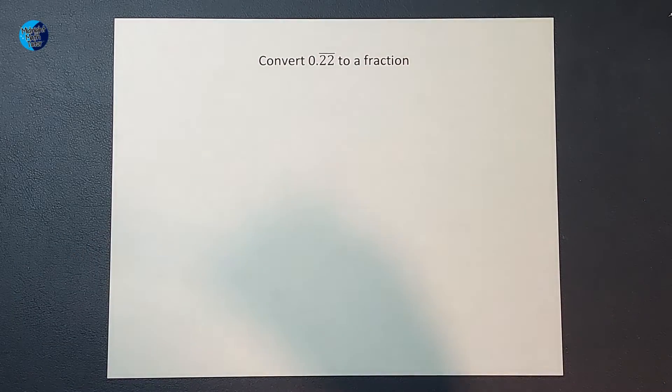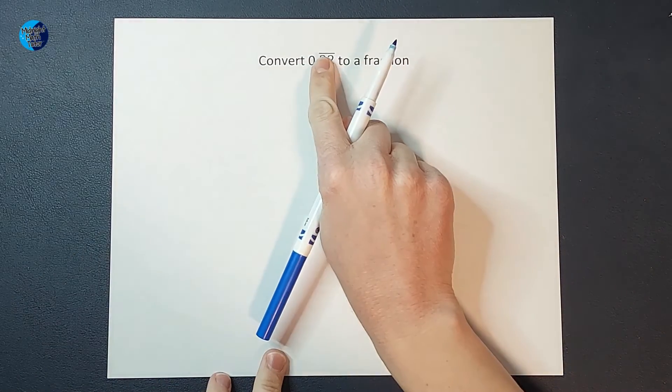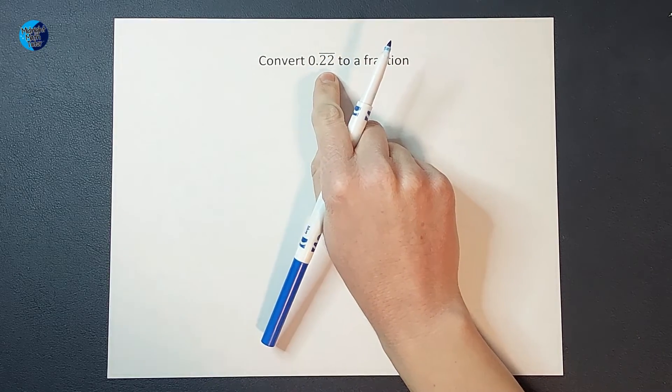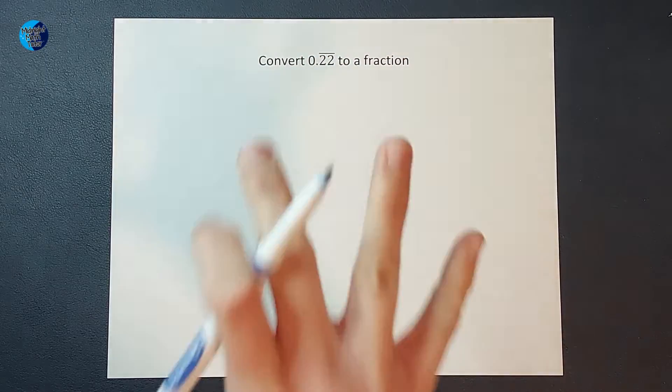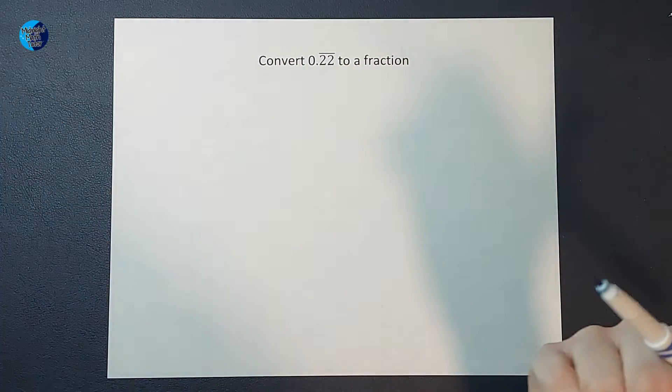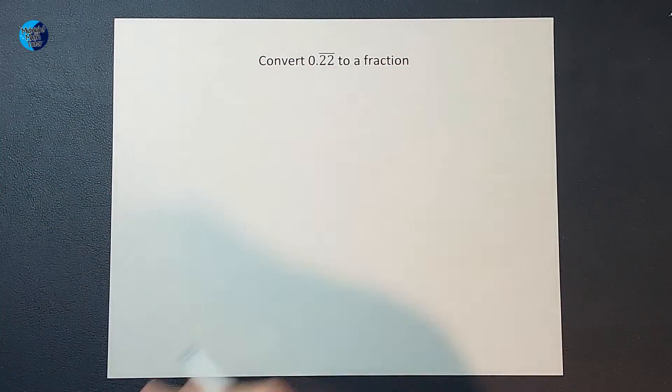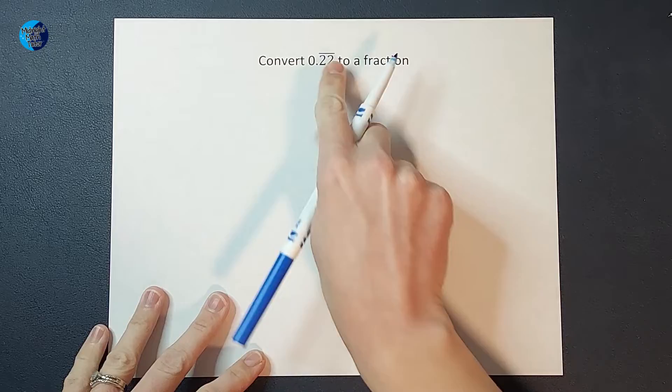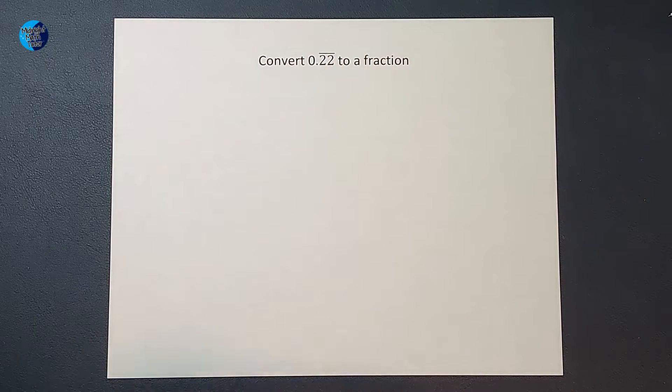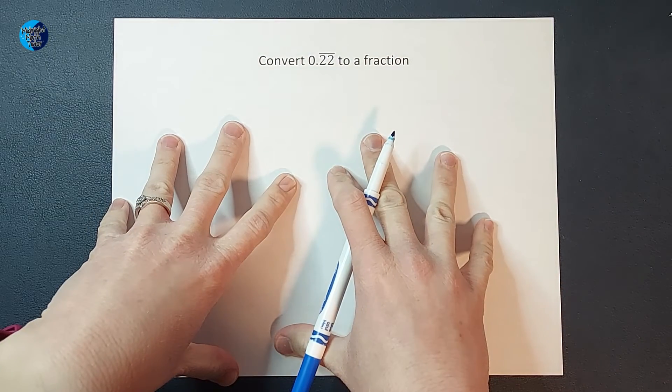So we're going to talk about a different way to do this. If you're not familiar, when you have this line above those twos, that means that this decimal literally repeats that two forever. 0.22222 forever. Obviously we can't write that, so we do that little line above. So how on earth am I supposed to turn this into a fraction?